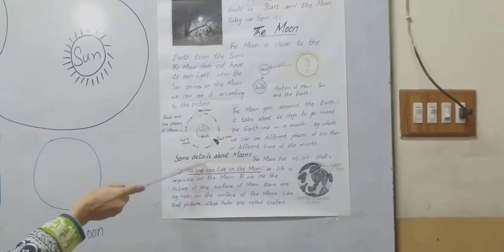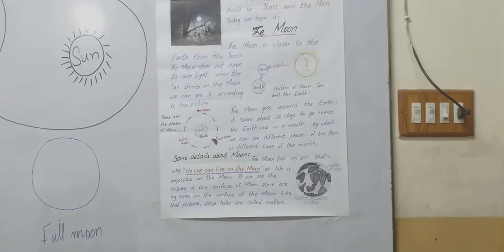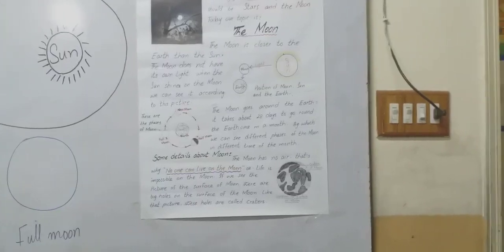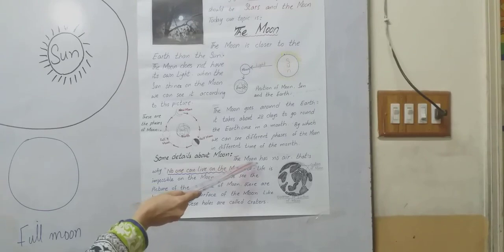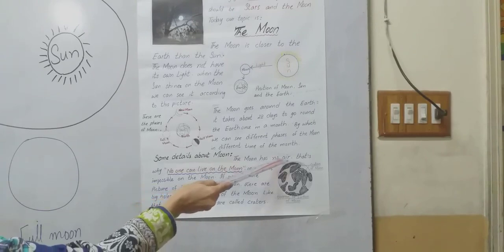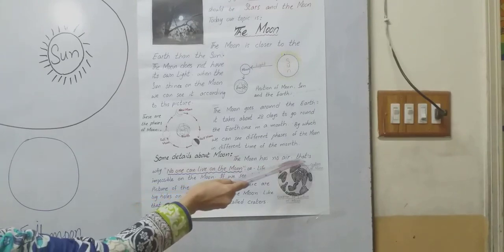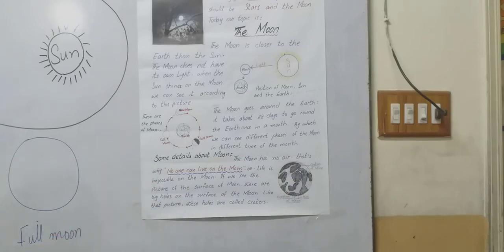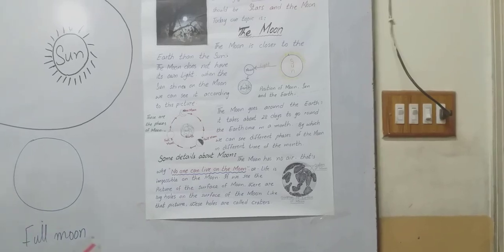Some details about the moon. The moon has no air. That's why no one can live on the moon. Life is impossible on the moon.